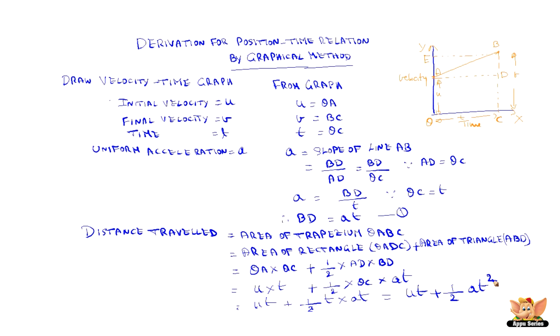So the position-time relation is S is equal to ut plus half a T squared. This is called the second equation of motion.